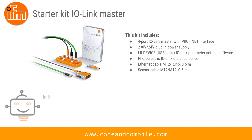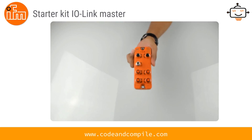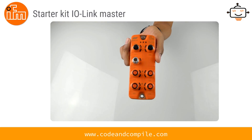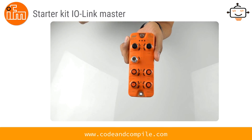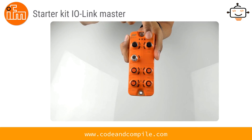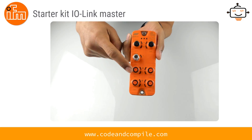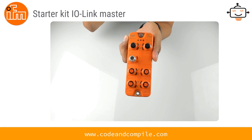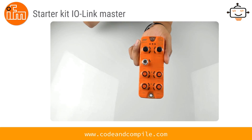In this video we will see what the starter kit includes, how to link the various components, and how to read sensor values with and without IO-Link. Looking closely at the interface, we have two Profinet ports which you can link to your MES, SCADA, or PLC. There is also a power port requiring 24 VDC for operation and four individual ports for connecting sensors or actuators. This main interface is called the AL1100.